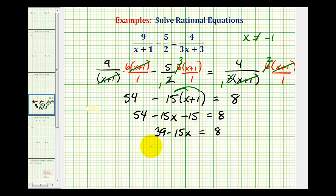Now I'll subtract 39 on both sides. We have negative 15x equals negative 31. Divide both sides by negative 15. So we have x equals positive 31 fifteenths. Notice this value is not equal to negative 1, and therefore x equals 31 fifteenths is our solution.